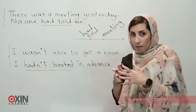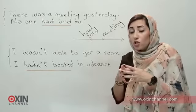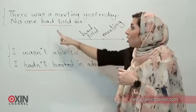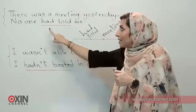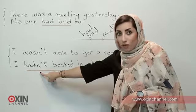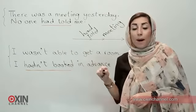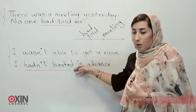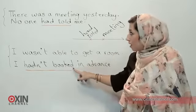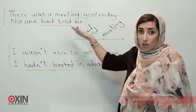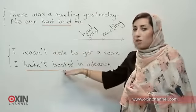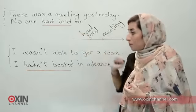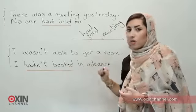So this is the usage — we are talking about a main event in the past and we want to mention something that happened before that main event. Now what about the structure? As you may have noticed we have had or hadn't — had for positive, hadn't for negative — and after that we have the past participle, the third form of the verb. We have two types of past participles: regular with -ed, and irregular. You need to memorize the irregular ones, but the regular ones you just add -ed to the present tense of the verb. So: had plus past participle, and hadn't plus past participle for negative.